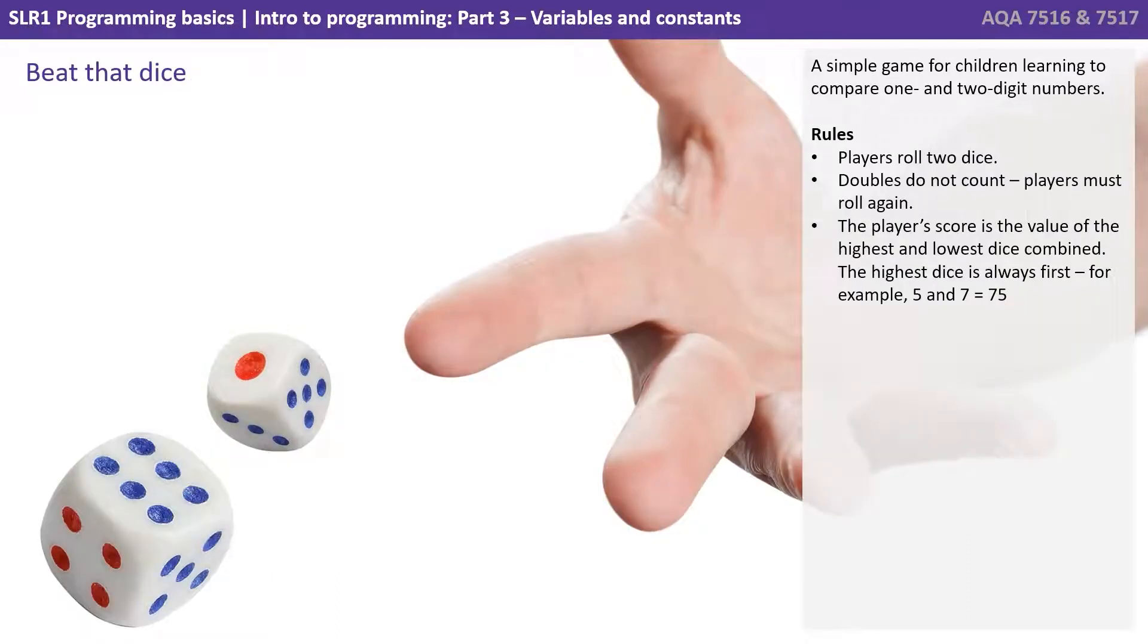To look at some examples of variables and constants, we're going to use the game Beat the Dice. It's a simple game for children learning to compare one and two-digit numbers. The rules are as follows: